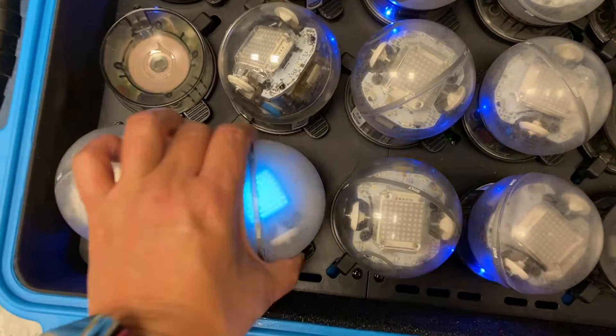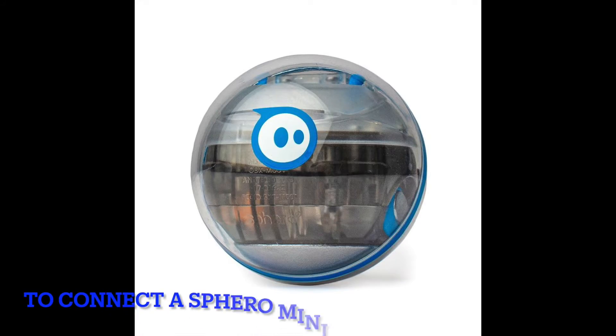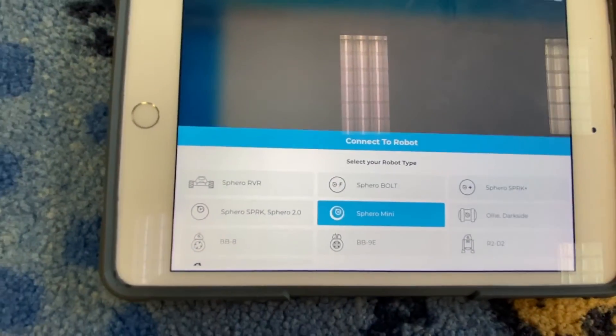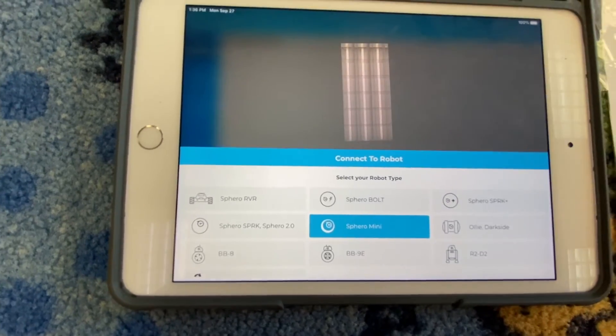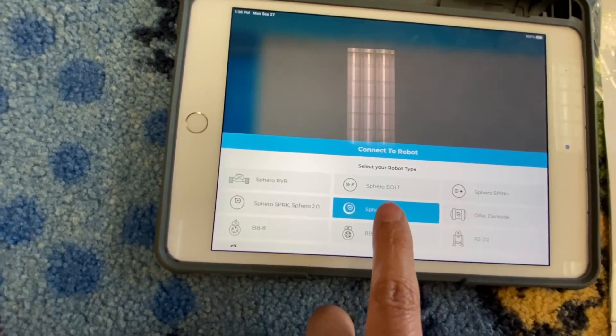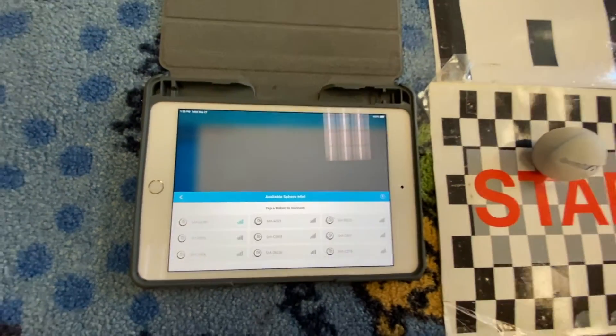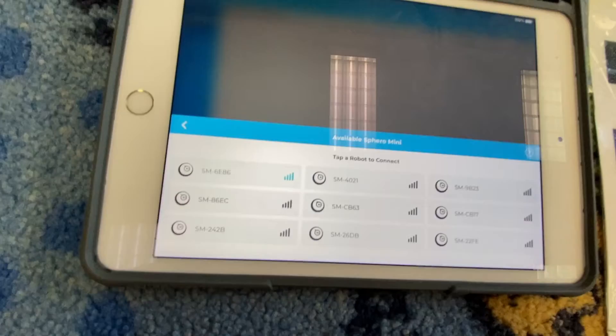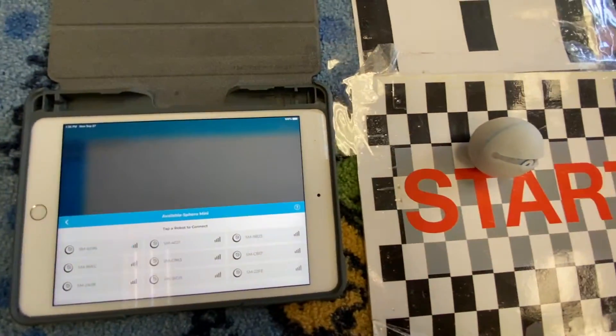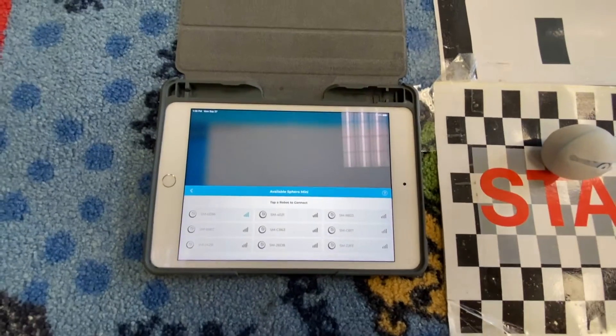Okay, so this one is lit up, that means it connected to this one. And click right here. Here are many robots that the Sphero can connect to. In this case we're going to select the Sphero Mini. Now usually the one that has the highest bars is the one, the robot that's closest to.